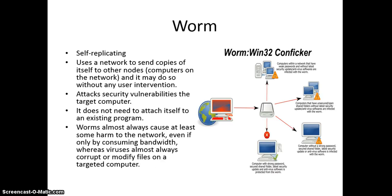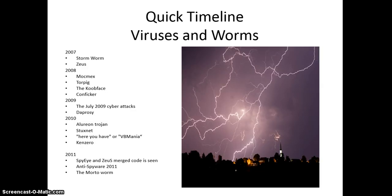One of the nastiest worms we've seen in recent years is Conficker. A worm is self-replicating and it attacks any security vulnerabilities on the target computers. It doesn't need a host, which is the distinction between it and a virus — all it needs is bandwidth and some connections. Here's a timeline of some of the different viruses and worms, dating back from 2007 until 2011.